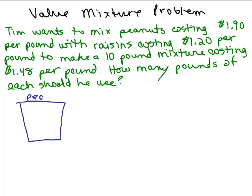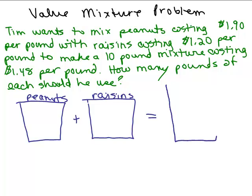We've got the peanuts in this bucket, let's say, and then we're going to mix that with some raisins. We're going to pour those together so that we get a big vat which I'll just call the mixture.